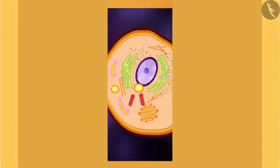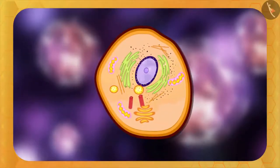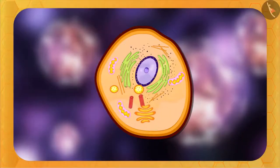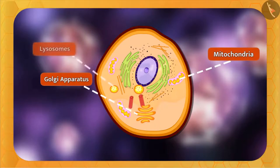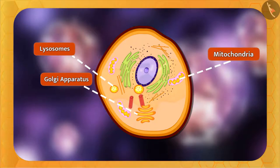Because of its jelly-like nature, all the cell organelles like mitochondria, Golgi apparatus, lysosomes, etc. float in it, and the required proteins of these cell organelles swim in the cytoplasm and reach them. Apart from this, it also maintains the texture of the cell, and all the chemical reactions also take place in the cytoplasm, which is responsible for the cell to survive.